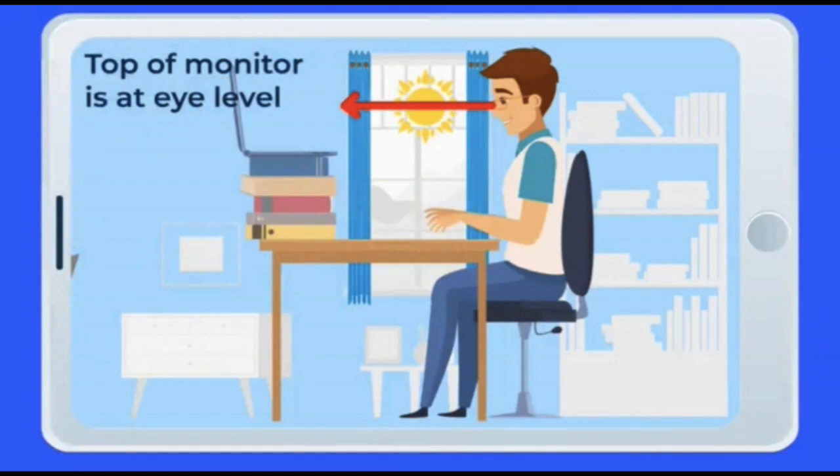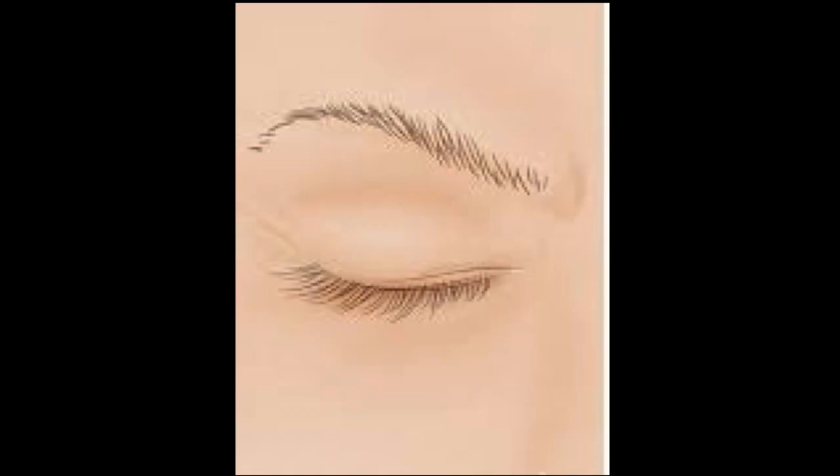Viewing screens while lying down also affects body posture and in the long run can cause issues like cervical spondylitis and back pain. Whenever doing screen activity, they should always sit upright. When using a laptop, make sure the center of the screen is at or just below eye level. Encourage the child to blink more — especially when engrossed in a video game — as staring at the screen leads to dryness of the eyes.